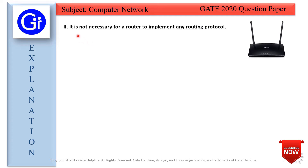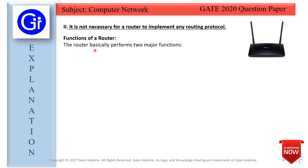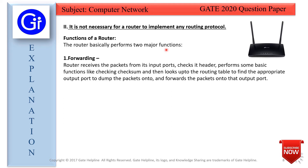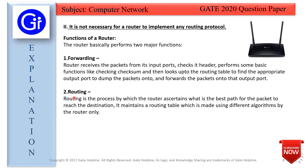Now we will see Statement 2 — it is not necessary for a router to implement any routing protocol. A router performs two major functions. The first is forwarding: the router receives a packet from its input port, checks its header, performs basic functions like verifying the checksum, looks up the routing table to find the appropriate output port, and forwards the packets. The second function is routing: the process by which routers determine the best path for a packet to reach its destination, maintaining a routing table built using different algorithms.